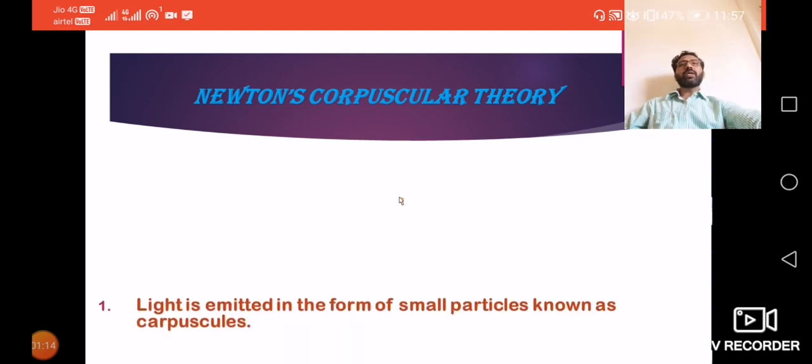Look at the first one. Newton assumed that light is emitted in the form of small particles, and these particles are known as corpuscles. Newton ne particles ka naam rakhha corpuscles. Aur ye light particles se bana hua, yese usne assume kiya.